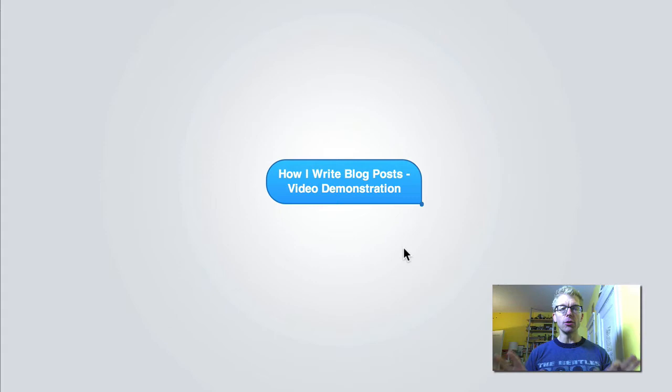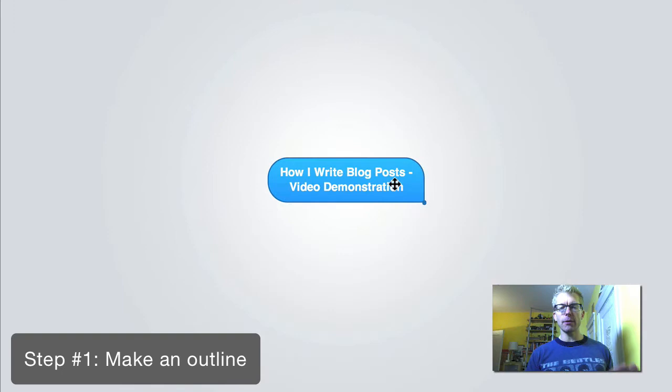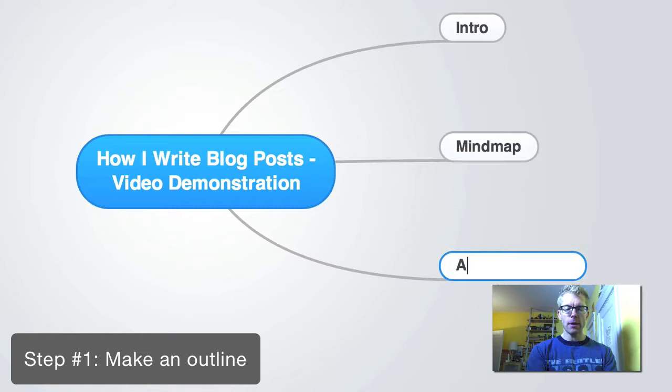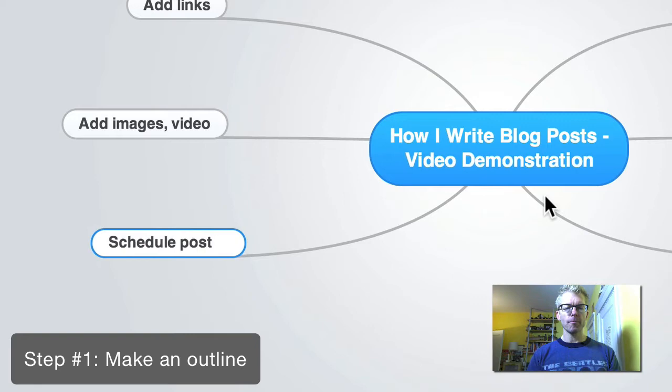I have a tool that I use called MindMeister, and what that does is it helps me create a mind map, basically. I'll create a basic structure for the blog post — for example, I might have an intro, then talk about the mind map, add copy, add links, and then schedule the post.